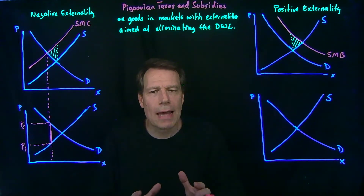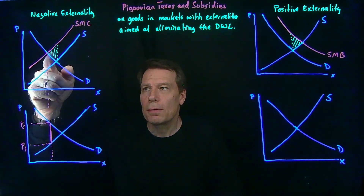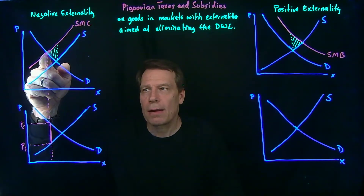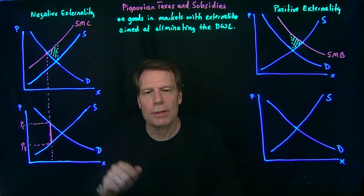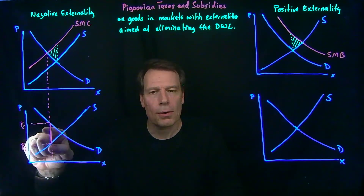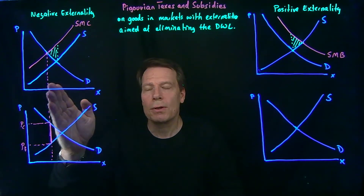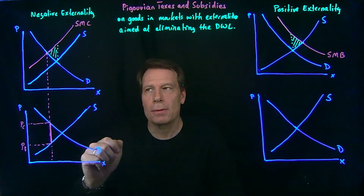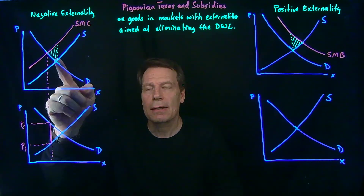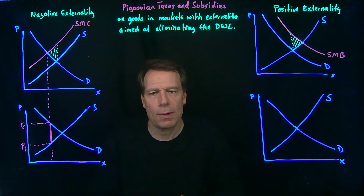Well, that's exactly what a Pigouvian tax is in this case. We know from our upper graph that we'd like to produce this socially optimal quantity, and so we can impose a tax and cause the market to produce that quantity. By causing the market to reduce its output, we keep it from creating this deadweight loss and so we eliminate the deadweight loss.